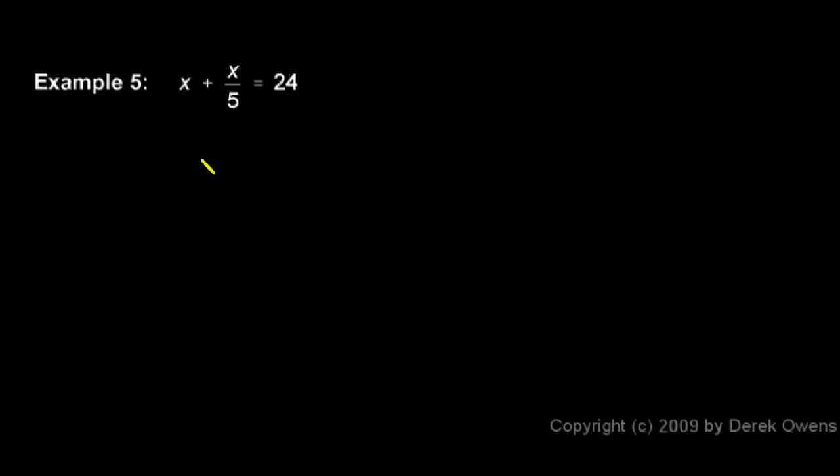Here's another one that's not too hard: x plus x over 5 equals 24. You can see that the least common denominator is 5, so we'll multiply both sides of the equation by 5 and then we distribute.